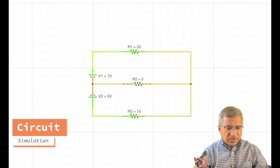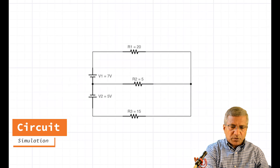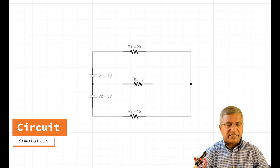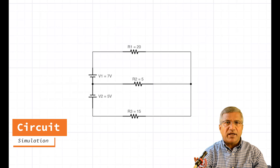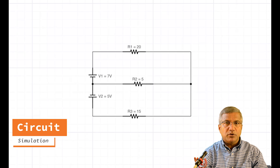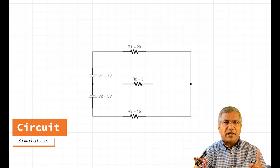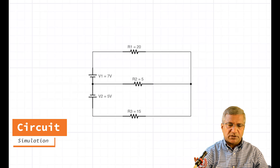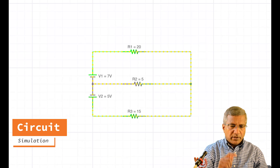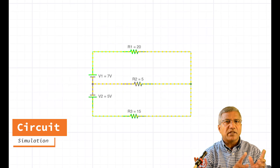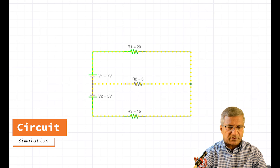Here is the circuit simulator. You can see V1 is 7 volts, V2 is 5 volts, resistance R1 is 20 ohms, R2 is 5 ohms, and R3 is 15 ohms. We have to measure the currents and the voltages. Now you can see the currents flowing — the little dots moving give you the direction of current.